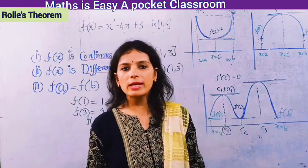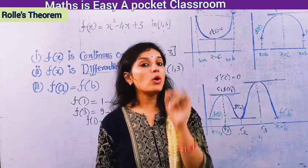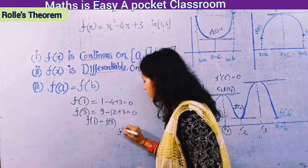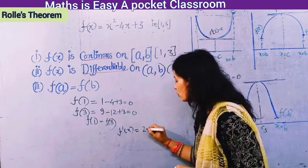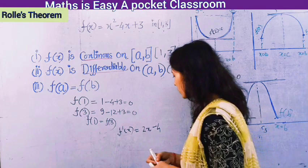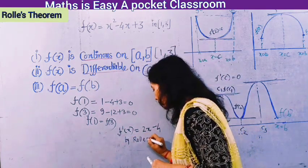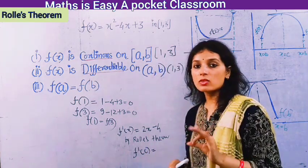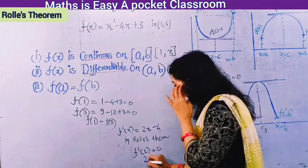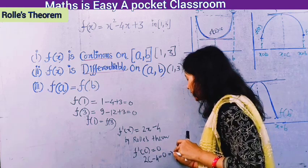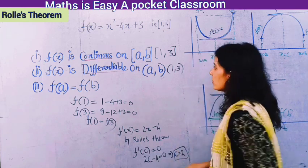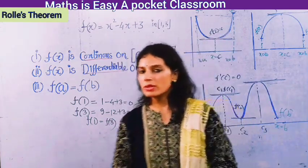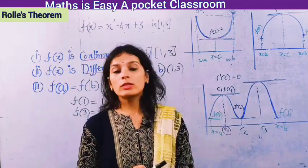Since all three conditions of Rolle's theorem are satisfied for this function, we must find a point c at which the tangent is parallel to the x-axis, i.e., f'(c) = 0. Differentiating: f'(x) = 2x - 4. Setting f'(c) = 0 gives 2c - 4 = 0, so c = 2. Since c = 2 belongs to the open interval (1, 3), Rolle's theorem is verified.